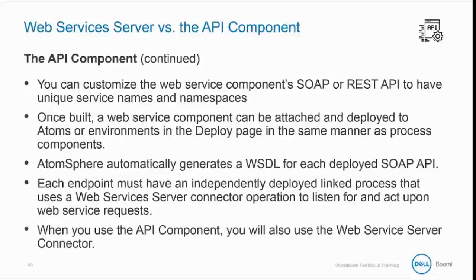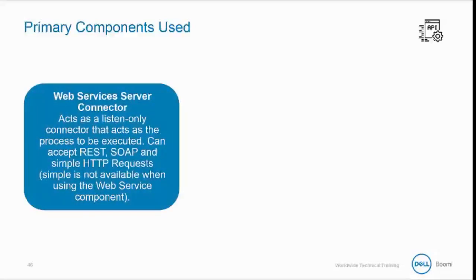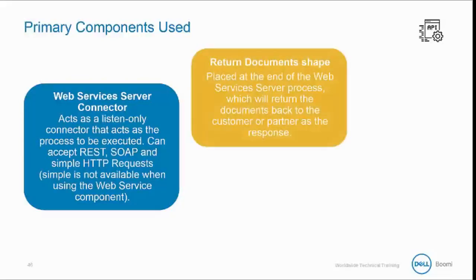When you use the API component, you will also use the web services server connector. The primary components used with an API include the web services server connector, which acts as a listen-only connector for the process to be executed — it can accept REST, SOAP, and simple HTTP requests. The second component is the Return Documents shape, which is placed at the end of the web services server process and returns the document back to the customer or partner as the response.